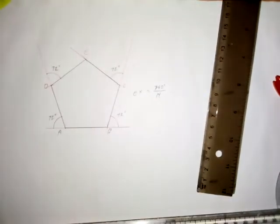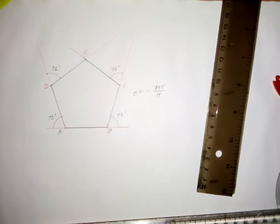The sum of exterior angles of a regular polygon is 360 degrees. Please subscribe to my channel if you have not subscribed, to learn more. We are laying the basic foundation of technical drawing. Thank you for listening. God bless you.